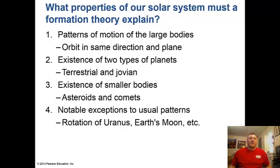What properties must a solar system formation theory explain? Patterns of motion of large bodies - they orbit in the same direction and plane. The existence of two types of planets: terrestrial and jovian - the rocky ones like Earth and the gaseous ones like Jupiter. The existence of smaller bodies such as asteroids, comets, and meteors. And notable exceptions to usual patterns, such as Uranus rotating on its side and Earth's moon.